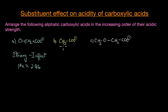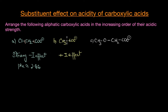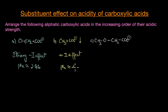Now let's look at acetic acid. The conjugate base is the acetate ion. Here we have a CH3 group — the methyl group is an electron donating group via the plus I effect. Because of this plus I effect, it pushes more electron density onto the carboxylate group and destabilizes the anion. The consequence is decreased acidic strength, which is reflected in the pKa value of acetic acid at around 4.76.